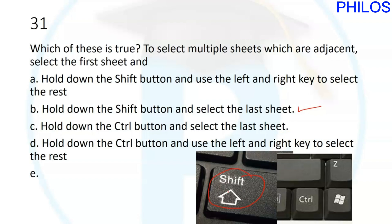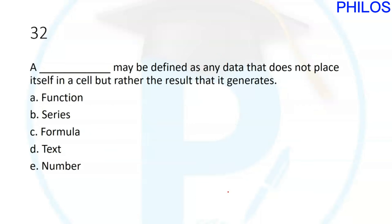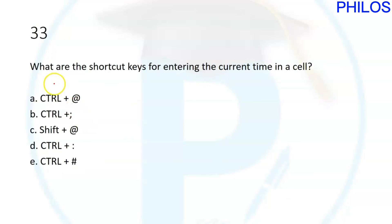Question thirty-two: blank may be defined as any data that does not place itself in a cell but rather the result that it generates. The correct answer is C: formula. A formula doesn't place itself in the cell but rather shows the result it generates.